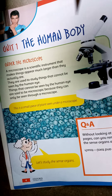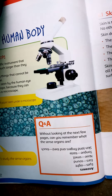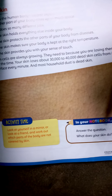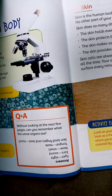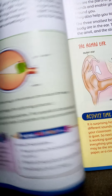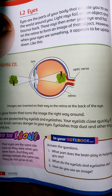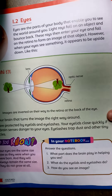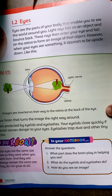As-salamu alaykum, Class 3, open your books. The science factored unit number 1, the human body. Students, as you all know, we have revised the first question and the first topic in our previous lecture.